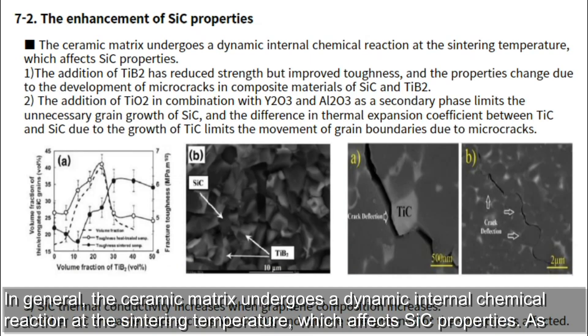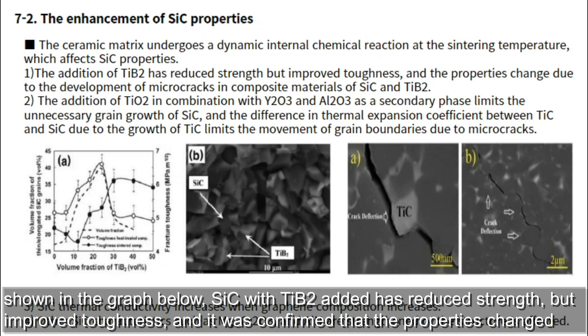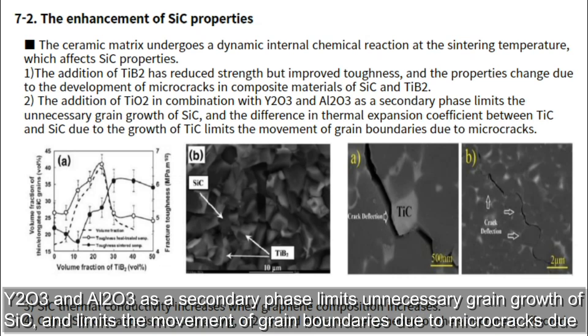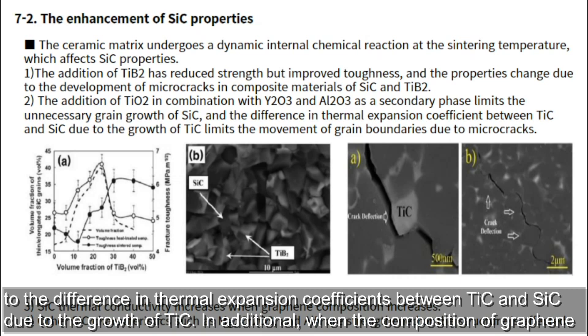In general, the ceramic matrix undergoes a dynamic internal chemical reaction at the sintering temperature, which affects SiC properties. As shown in the graph below, SiC with TiB2 added has reduced strength but improved toughness, confirmed to result from the development of micro-cracks in the SiC-TiB2 composite. The addition of TiB2 together with yttrium and aluminum oxides as a secondary phase limits unnecessary grain growth of SiC and restricts grain boundary movement via micro-cracks due to differences in thermal expansion coefficients between TiC and SiC.